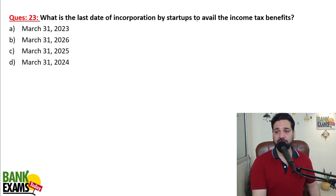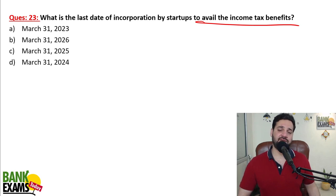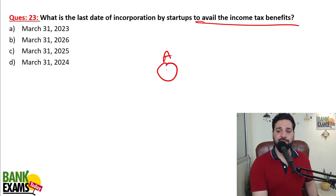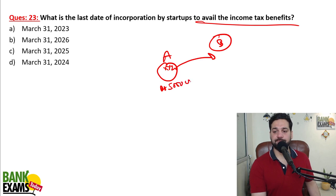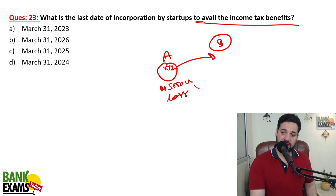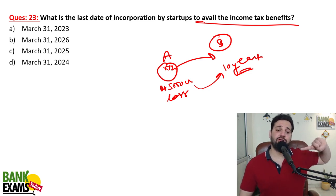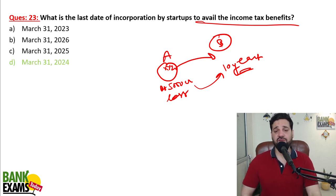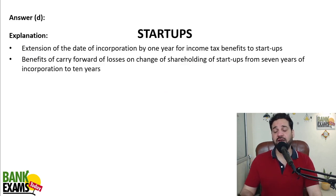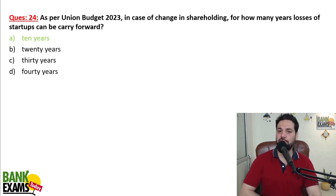What is the last date of incorporation by startups to avail income tax benefits? If a person sells their startup and there are losses — say 5,000 crore ka loss — if company B buys that startup, this loss can be carried forward for 10 years. Previously it was 7 years, now it is 10 years. The cutoff date was 31st March 2023 but has been extended to 31st March 2024.